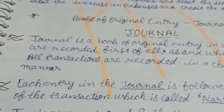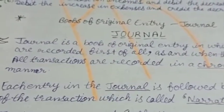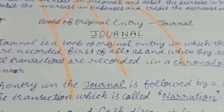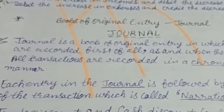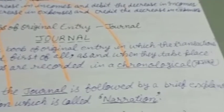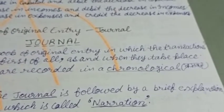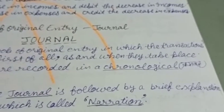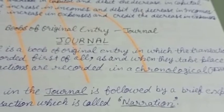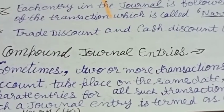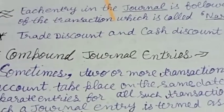In the journal, each entry is followed by a brief explanation of the transaction, which is called narration. This explanation is called narration.